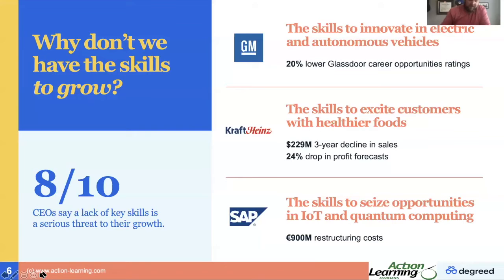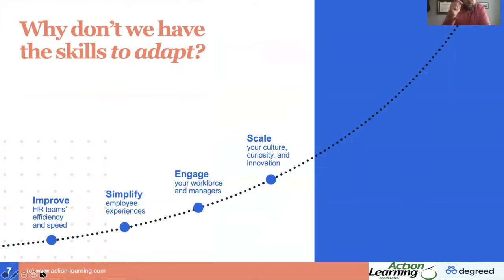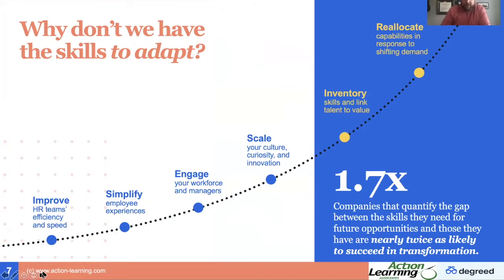I've never met a CEO who disagrees — they all struggle with this. The key takeaway here is that all of those companies we just talked about have those sophisticated systems: great learning technologies, HCM systems, all of that. They even saw the change coming — the Internet of Things, autonomous vehicles — they saw where it was going and still failed to meet that change. These aren't bad companies; they've got great cultures and people who've grown and evolved, but they're really missing that systematic way to look at future opportunities.